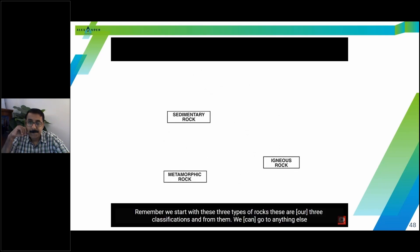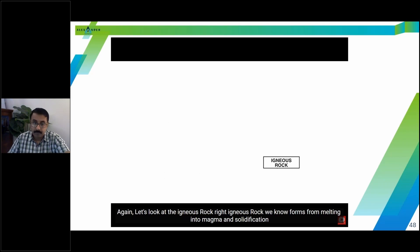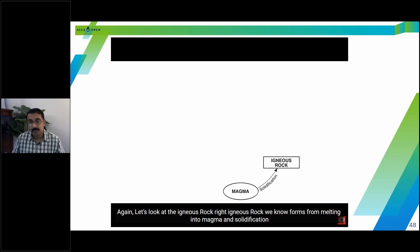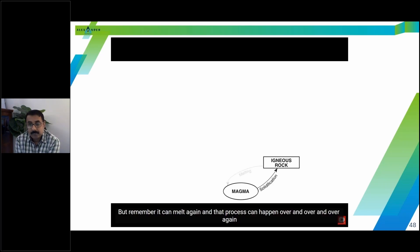Remember, we start with these three types of rocks. These are our three classifications, and from them, we can go to anything else. Again, let's look at the igneous rock. Igneous rock forms from melting into magma and solidification. But remember, it can melt again, and that process can happen over and over again. So I can have an igneous rock that becomes igneous again, maybe a different kind of igneous rock.